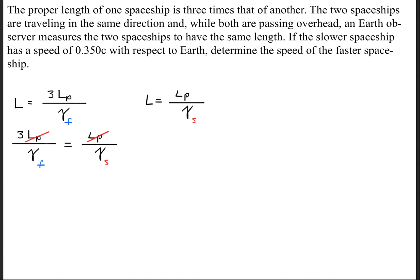We'll go ahead and cancel the proper length variables on both sides, and we'll be left with 3 over gamma sub F is equal to 1 over gamma sub S. The next thing we're going to do is we're going to expand these gammas right here so that we get 3 times the square root of 1 minus V sub F over C squared is equal to the square root of 1 minus V sub S over C squared.